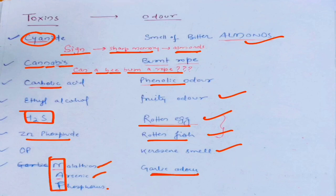A typical garlicky odor is seen in three compounds — you can remember them by MAP: that is Malathion, Arsenic, and Phosphorus. I hope this short video was helpful. Please like, comment, and subscribe to this channel, and don't forget to hit the bell icon so you keep getting newer videos every week. Thank you very much for watching.